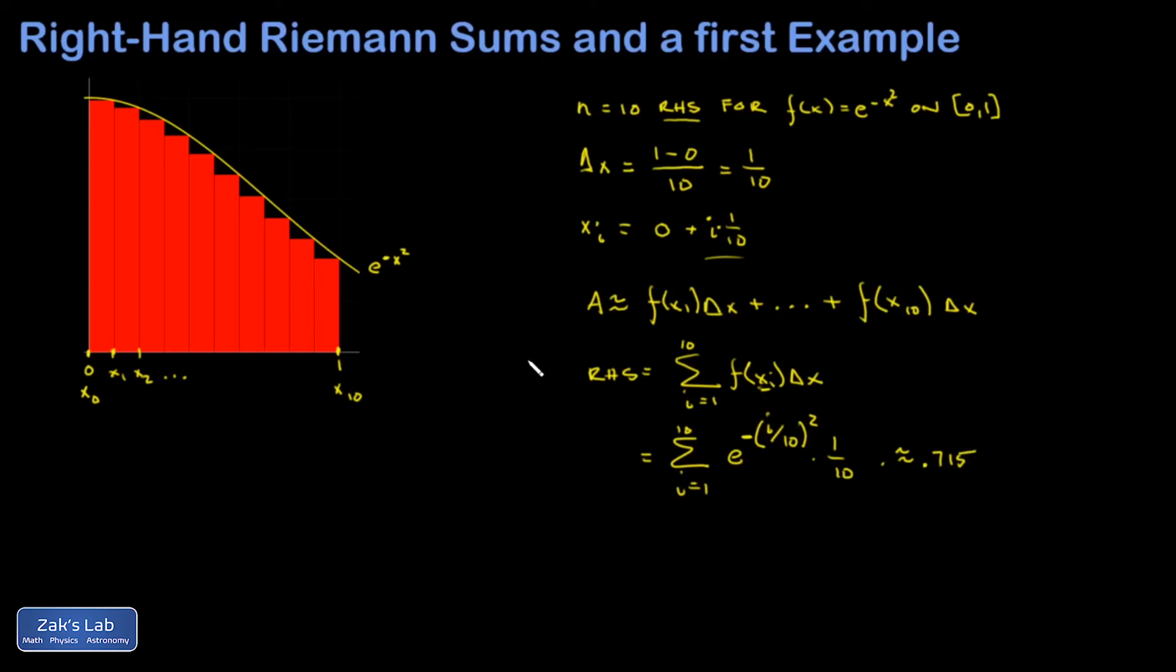Now I want to mention one thing before we move on, and that is because e^(-x²) is decreasing on this interval, my right-hand sum is underestimating the true area. You can see that every rectangle leaves a little bit of area unaccounted for, and so I want to check for a more accurate answer and then just verify that our rectangle approximation underestimated.